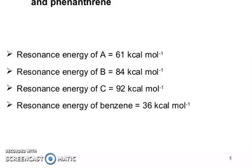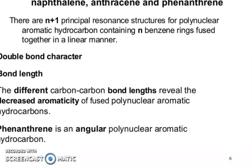Resonance energy of benzene is 36 kilocalories per mole. Resonance structures and bond length of naphthalene, anthracene, and phenanthrene. There are N+1 principal resonance structures for polynuclear aromatic hydrocarbons containing N benzene rings fused together in a linear manner. Different carbon-carbon bond lengths reveal the decreased aromaticity of fused polynuclear aromatic hydrocarbons.